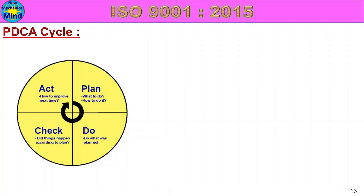The PDCA Cycle: Plan — what activity we can do. Do — do what was planned. Check — did things happen according to plan. Act — how to improve next time, meet the target. Improvement action. This is the PDCA cycle.